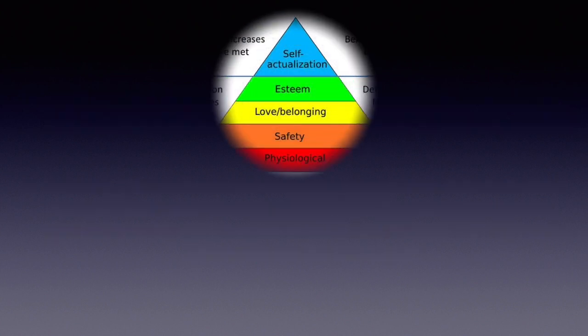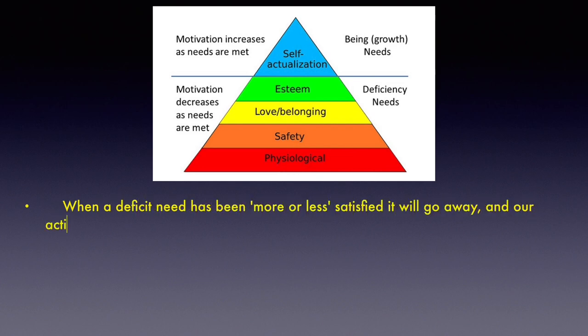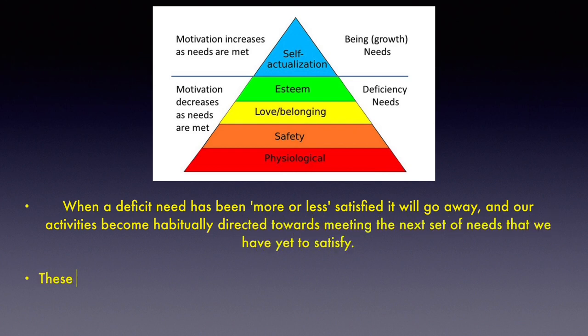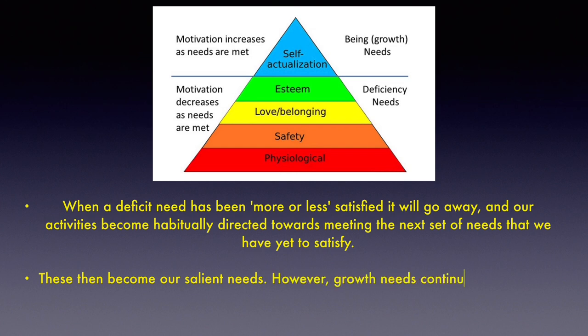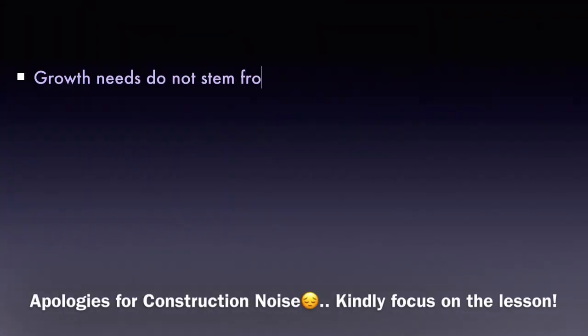This pyramid is divided into deficiency needs and growth needs. Esteem, love and belonging, safety, and physiological needs are all part of deficiency needs — motivation decreases as these needs are met. Growth need motivation, however, increases as needs are met. When a deficiency need has been more or less satisfied, it will go away and our activities become directed toward meeting the next set of needs. Growth needs continue to be felt and may even become stronger as they are engaged.